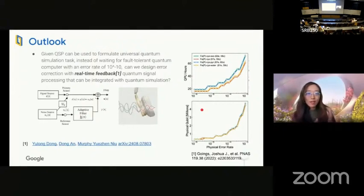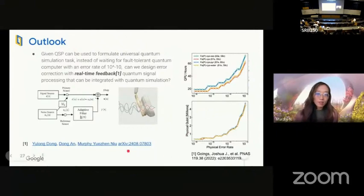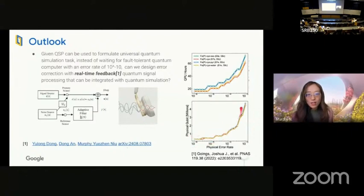Given that quantum signal processing can be used to realize any universal quantum computing task, so instead of waiting for a fault-tolerant quantum computer to arrive, which already have close to zero errors, can we design error correction with real-time feedback using quantum signal processing that integrates it with our quantum metrology algorithm? Indeed, in a recent work of ours, we show that quantum signal processing have already a very nice structure that we can use for feedback or feedforward. In this way, we can try to avoid this type of millions of qubit requirements in regard to the resource that's needed for real-world impact.